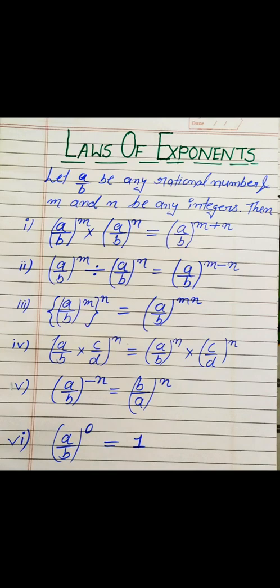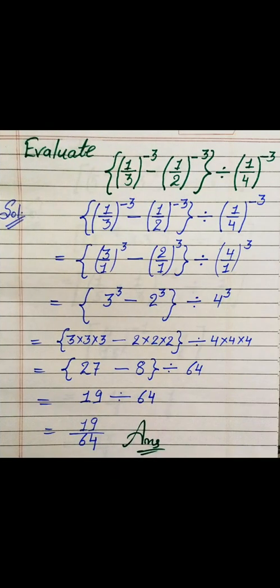Today we will do some miscellaneous questions based on these laws. The first one is: within a bracket, (1/3) to the whole power −3 minus (1/2) to the whole power −3, all divided by (1/4) to the whole power −3. We will first solve the small bracket according to the BODMAS rule. As you can see, all the rational numbers are having negative power.